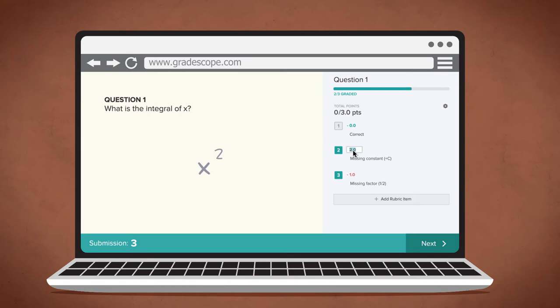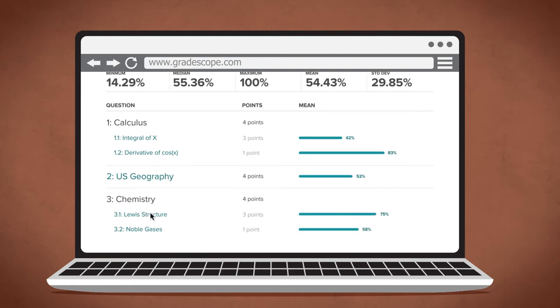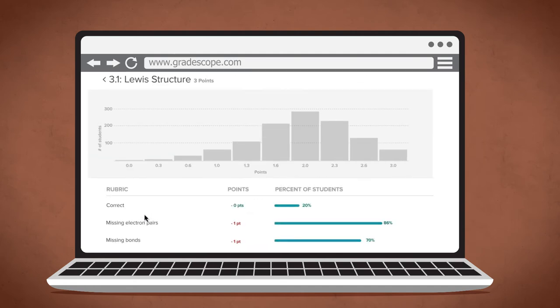You can be more consistent. You can change the points associated with different rubric items on the fly. You can have a record of exactly which student made what mistake. You can download a spreadsheet of every rubric item applied to every student. That can really help know who is not getting what.